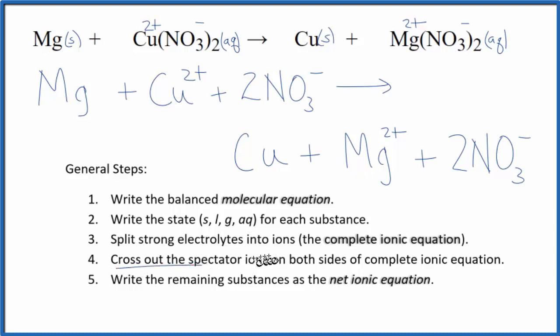Now we can cross out spectator ions. They're on both sides of the complete ionic equation. They haven't changed, so we're not really interested in them. The only thing I see in the reactants that's the same in the products, these two nitrate ions right here. So we'll cross those out, and that'll give us our net ionic equation for Mg plus Cu(NO3)2.